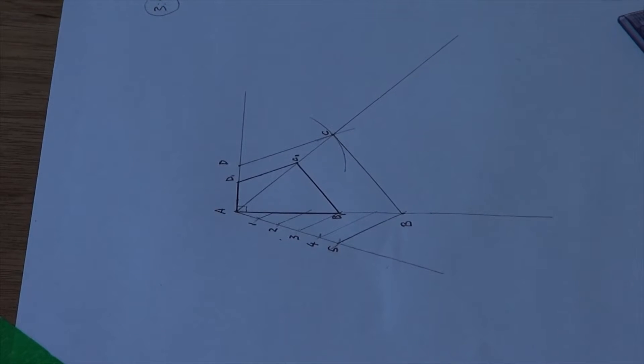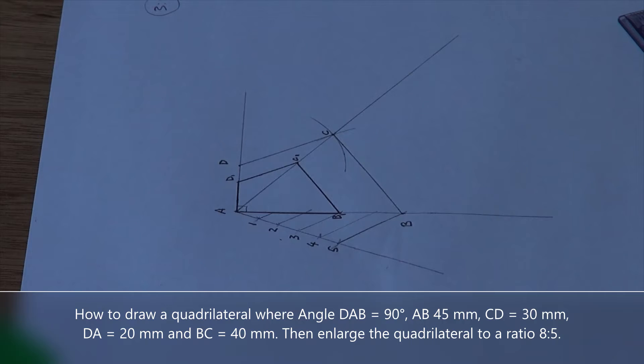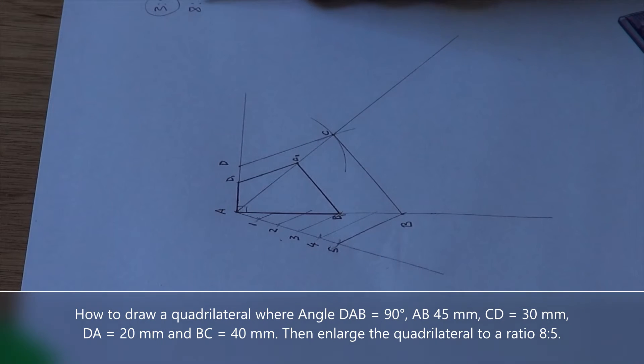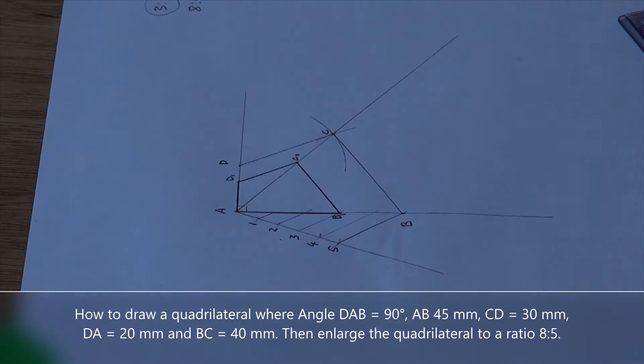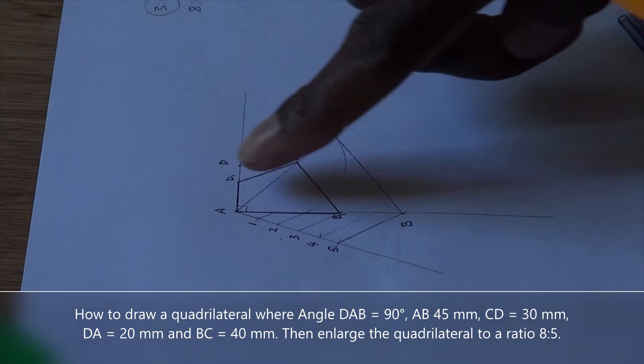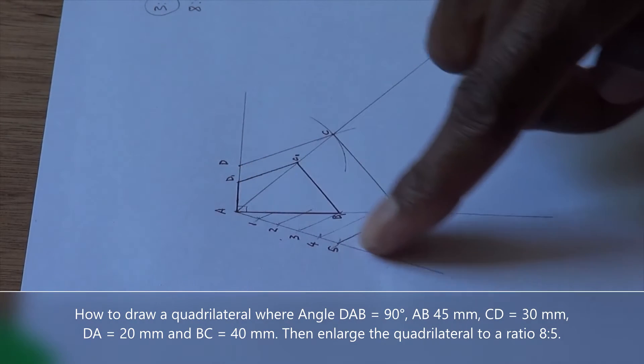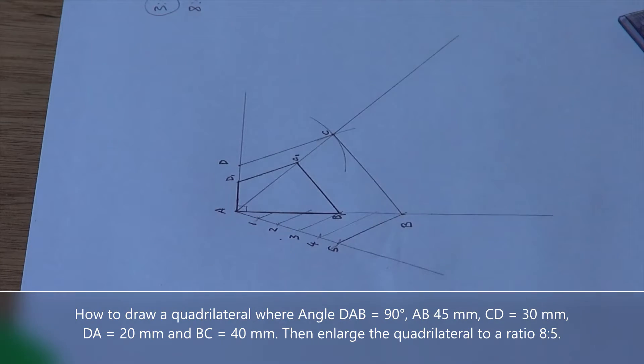Last time we did the reduction in the ratio 3 to 5, and now we are going to do the enlargement in the ratio 8 to 5. We remember we had this line with five equal parts.